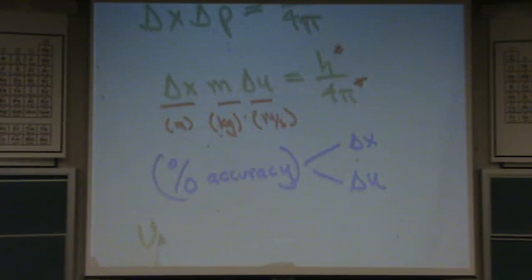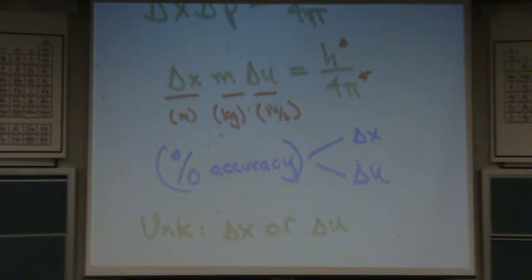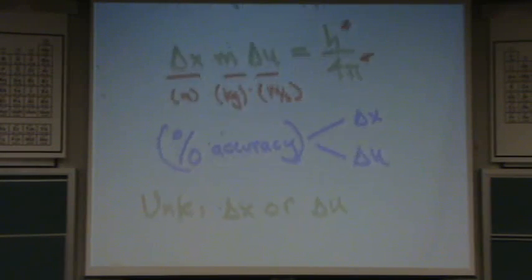So this is really a plug-and-chug sort of problem. Everything else is given, except for delta x and delta u. Usually there's a percentage, and you multiply it by that one it's given. So I don't have an example for you, but that's the basic concept. Think of it as plug-and-chug, and you'll be pretty happy on the test if you get it.